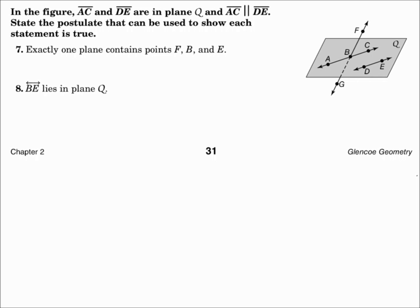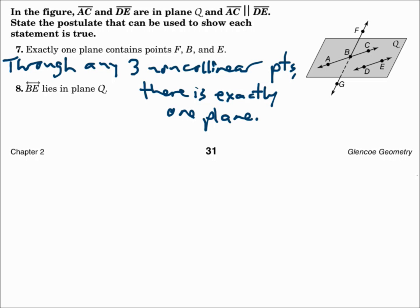In the figure, segment AC and segment DE are in plane Q, and segment AC is parallel to segment DE. State the postulate that can be used to show each statement is true. Number seven: exactly one plane contains points F, B, and E. Since points F, B, and E are non-collinear, we use the postulate: through any three non-collinear points, there is exactly one plane.